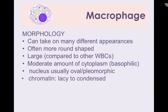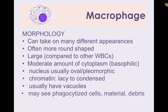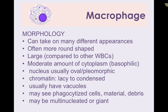Macrophages can take on many different appearances — often round, oval, or slightly irregular in shape. They tend to be quite large compared to most white blood cells, though sometimes they're the same size as a monocyte or neutrophil. They have a moderate amount of cytoplasm that is most often basophilic — taking on a purple appearance. The nucleus is usually oval or slightly pleomorphic, chromatin is lacy to condensed, and they often have vacuoles. They may be phagocytizing material or debris and can be multinucleated.